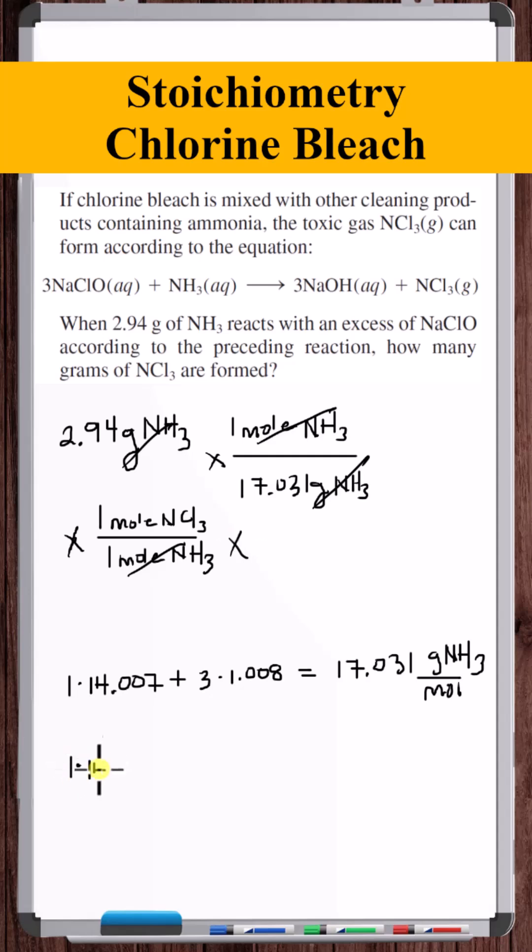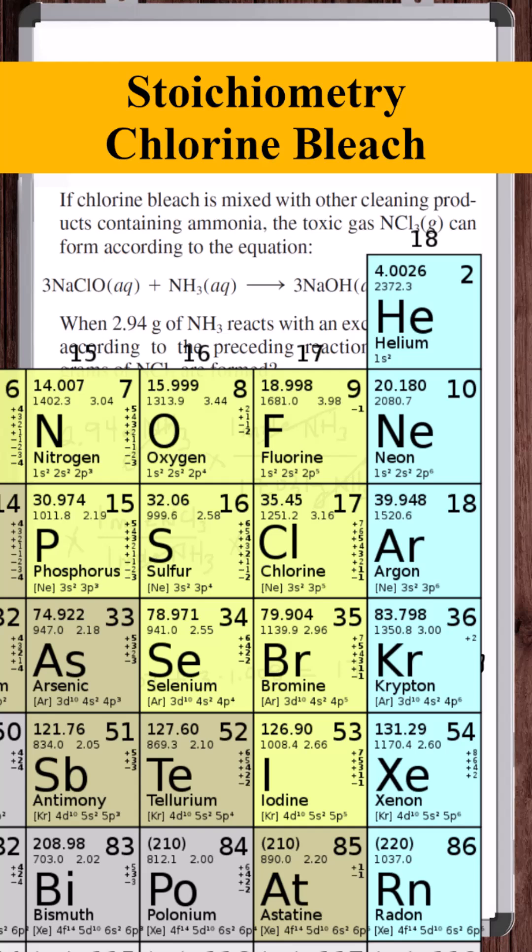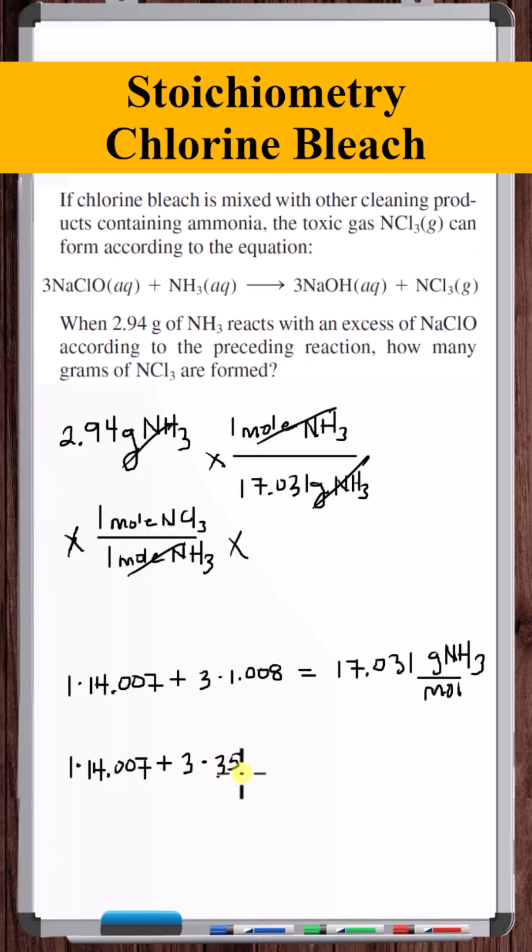Now let's find the molar mass of NCl3. So again, one atom of nitrogen, three chlorine atoms, molar mass 35.45.